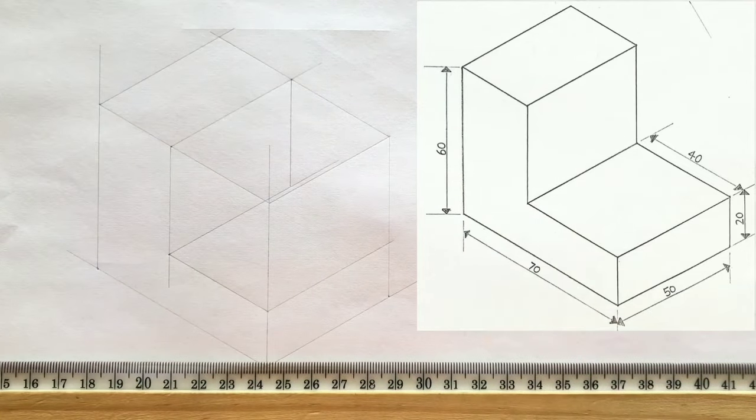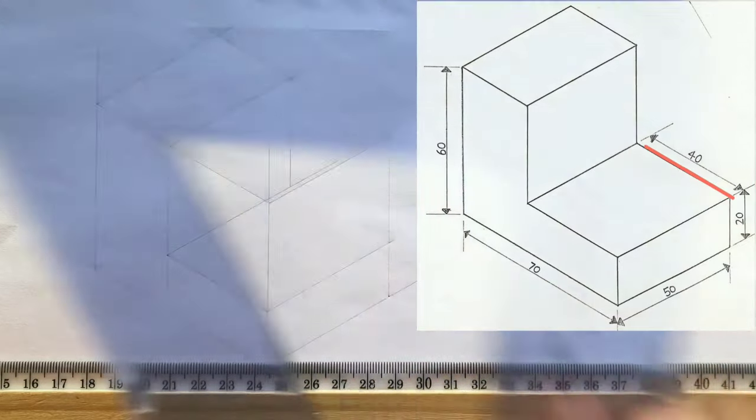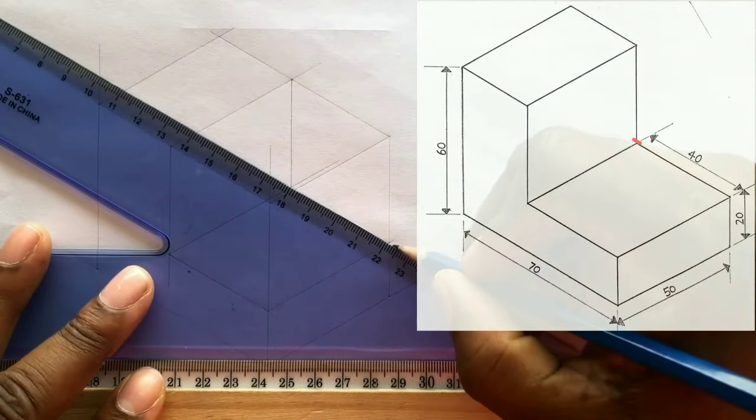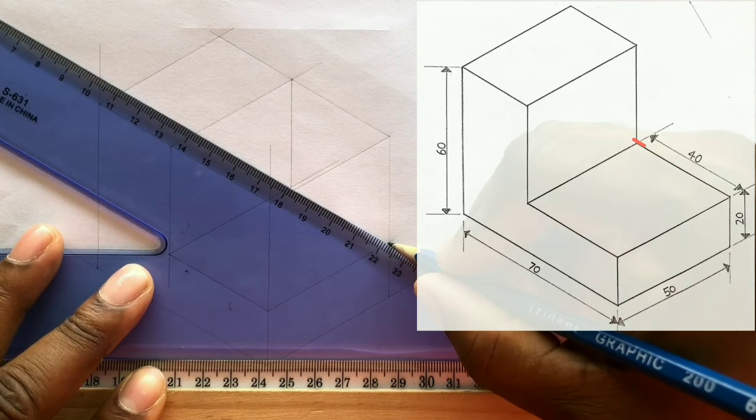Now your final step is to draw a line from this point to this point. Once you are accurate with all previous steps, then this line will perfectly intersect at both points.